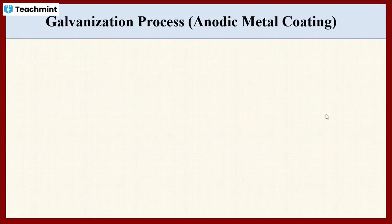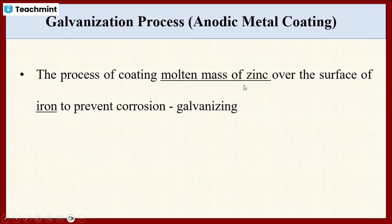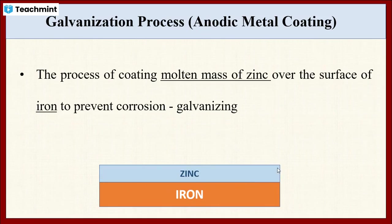Now let us see in detail about the galvanization process. In order to prevent the iron metal from corrosion, if we coat the iron metal with molten zinc over the surface of iron, then that process is known as galvanizing. For example, consider this as iron — to protect it from corrosion, we coat it with the molten mass of zinc, and this process is known as galvanizing.